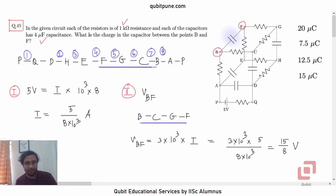So it will be 15 by 8 volts. Because 10 to the power 3, 10 to the power 3 will get cancelled. 5 into 3 is 15, 15 upon 8. So 15 upon 8. Last part.